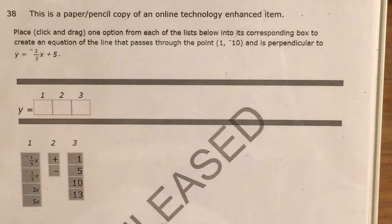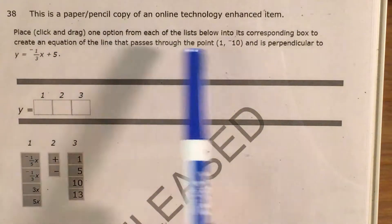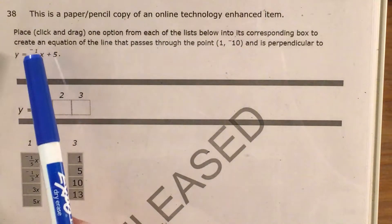What's up math scholars and math haters? This is Mr. W. Today we're going to tackle question 38 in the Math 1 questions that North Carolina released this past school year. The question is asking us to find the equation of the line that passes through this point and is perpendicular to this function.